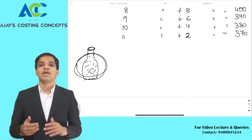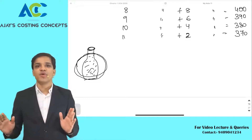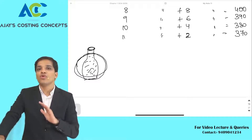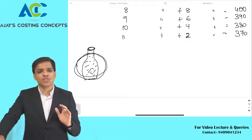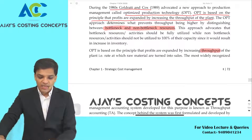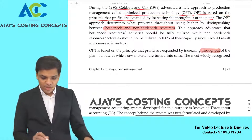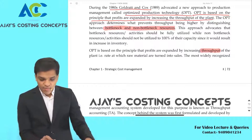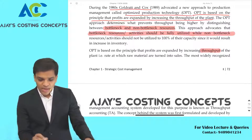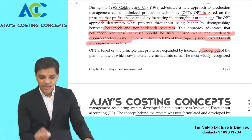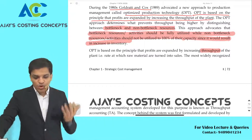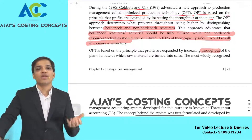Non-bottleneck activities are those which are higher in numbers — we have no constraints for them, no scarcity. Use as much as you can; the more you use, the more you get. There will never be a question of constraint. This approach advocates that bottleneck activities should be fully utilized, while non-bottleneck activities should not be utilized to 100% of their capacity, since it would result in increased inventory.